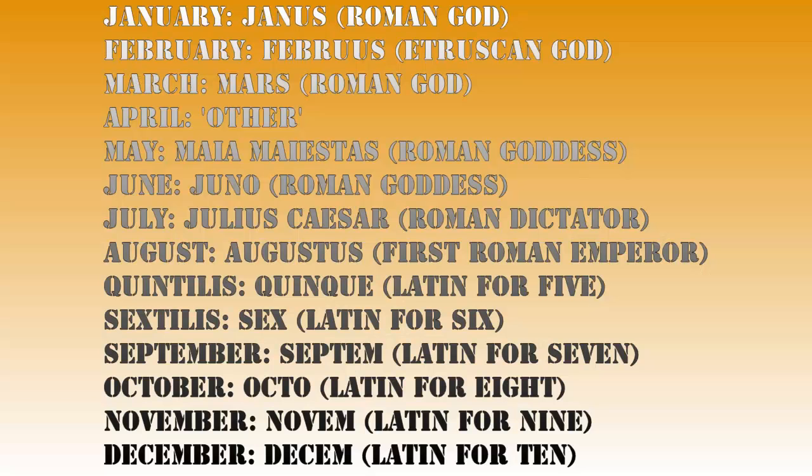Please note that in this calendar, months 5 through 10 were actually numbered instead of being named after, for example, gods.